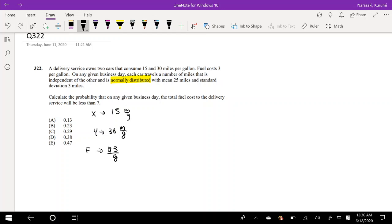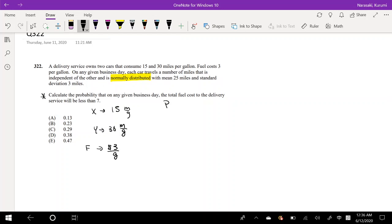What we're trying to find is the probability that on any given business day, the total fuel cost, so I'm going to put this in terms of cost, the probability that x plus y will be less than 7.